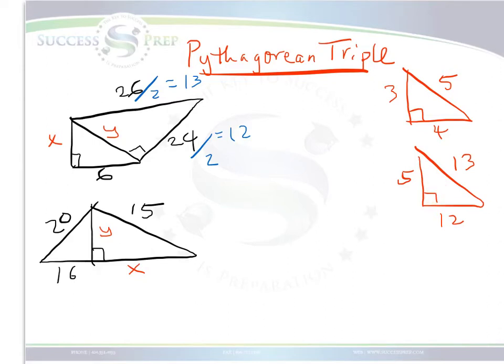This tells us that this side, Y, must be the 5 side. Now, notice I didn't say that Y is 5. It is the 5 side because you recognize that 26 and 24 had been multiplied by 2.